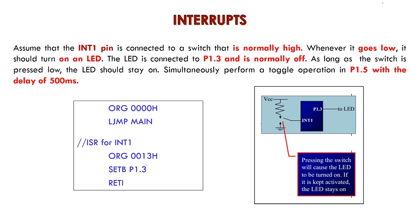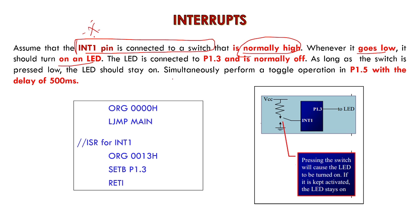This logic is very simple. Assume that the INT pin is connected to a switch — interrupt one pin is connected to the switch. It is normally high, as given in the program itself. Whenever it goes low, it turns on the LED. The LED is connected to port 1.3. It is normally off. As long as the switch is pressed low, the LED should stay on — that is the same logic for the interrupt.